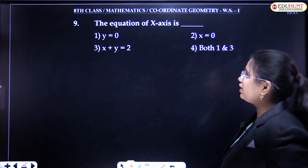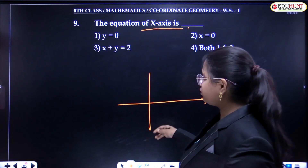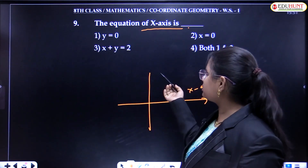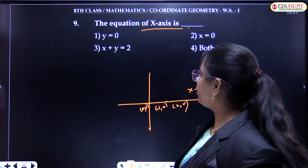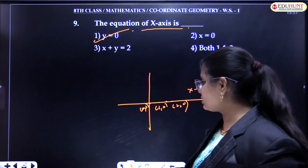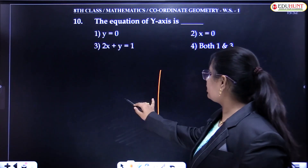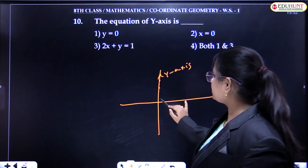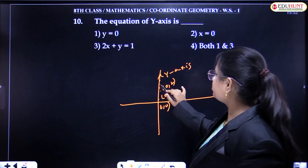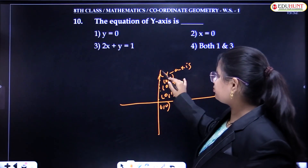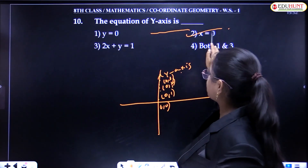Next questions: what is the equation of the X axis and the equation of the Y axis? On the X axis, all Y coordinates are 0 — for example (1,0), (2,0) — so Y = 0 is the equation of the X axis. Similarly, on the Y axis, all X coordinates are 0 — for example (0,1), (0,2), (0,3) — so the equation of the Y axis is X = 0.